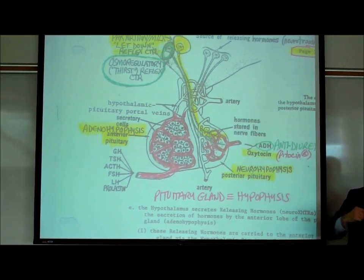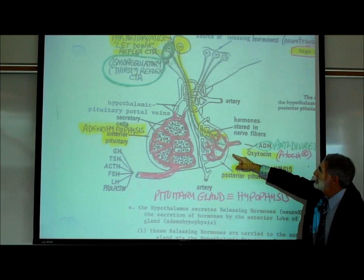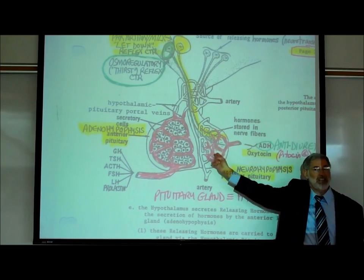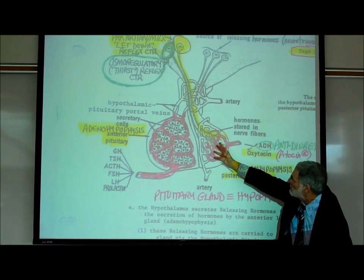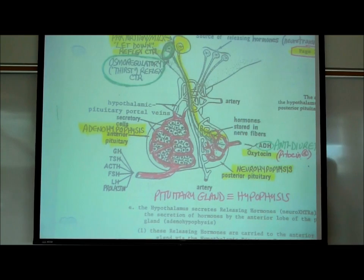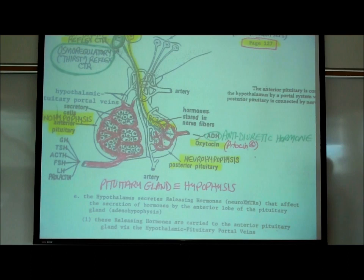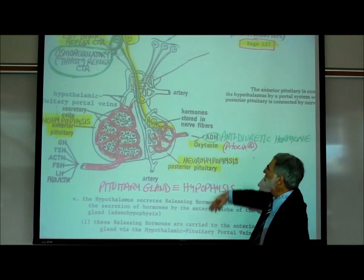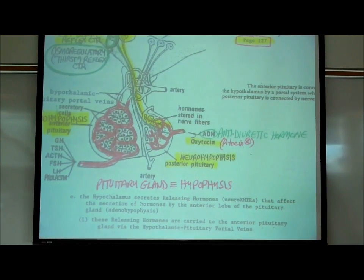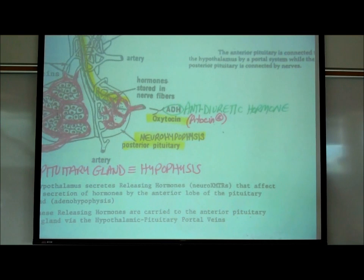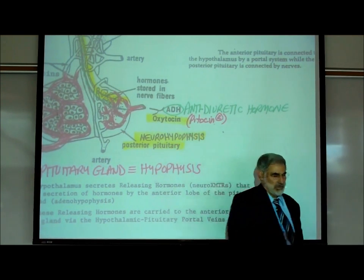These neurons release neurotransmitters from their synaptic knobs directly into the bloodstream, so they circulate like hormones. The two neurotransmitter hormones released this way are ADH — antidiuretic hormone — and oxytocin.